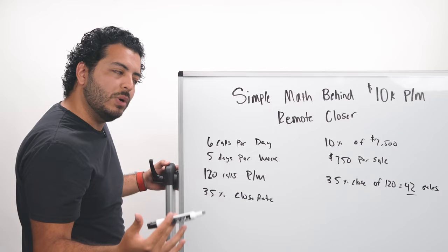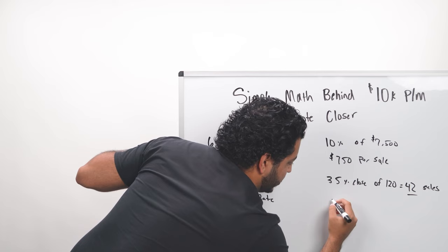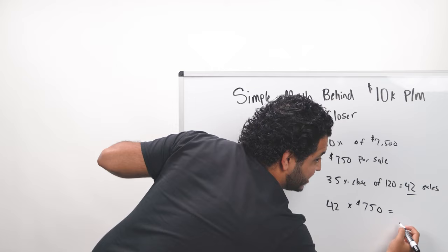So now again, 35%, you're taking 120 sales calls and then the $750 per sale. So if we take that, this is 42. So we take the 42 times the $750 per sale, and that is going to break you down to about $31,500.